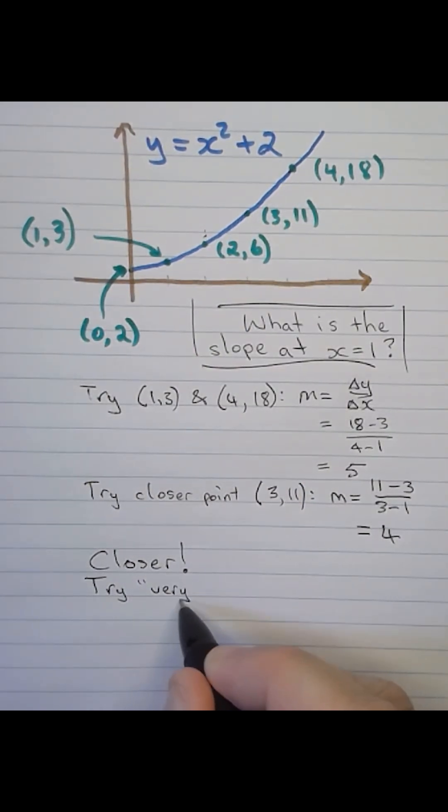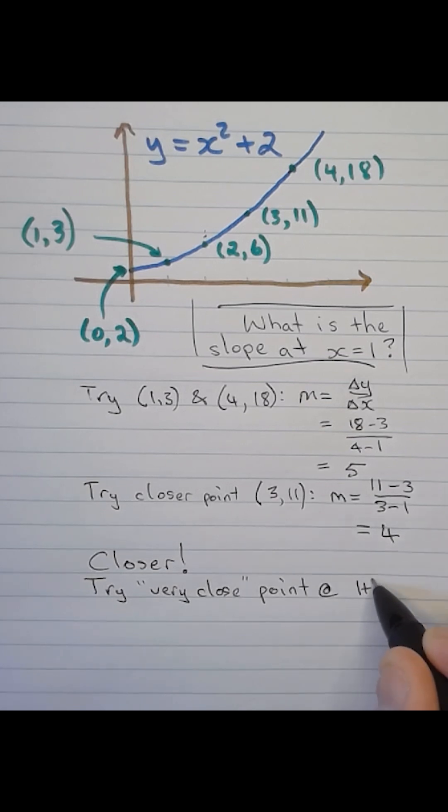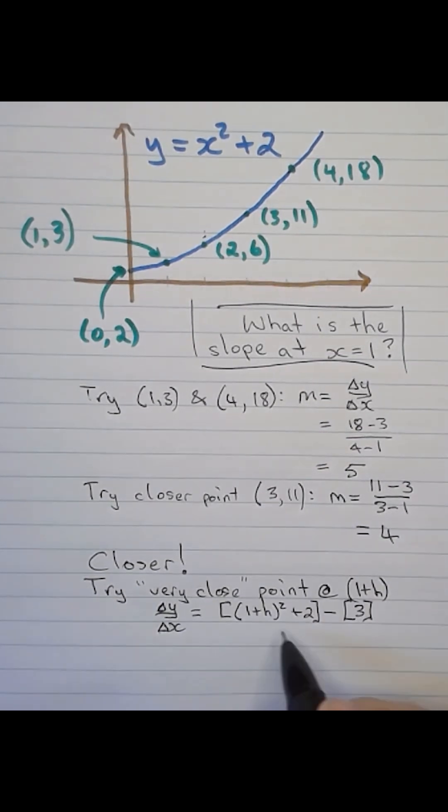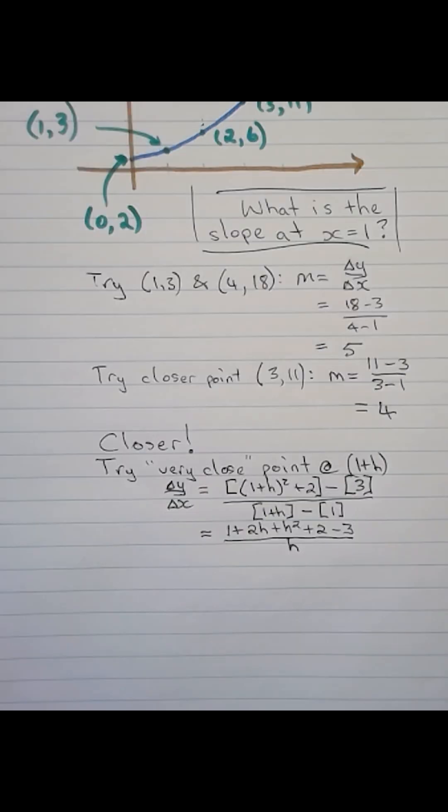An idea is to think about a very close point, x equal to 1 plus h. So the function value at x equals 1 plus h, we get (1 plus h) squared plus 2.